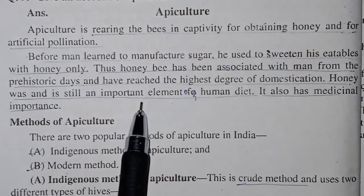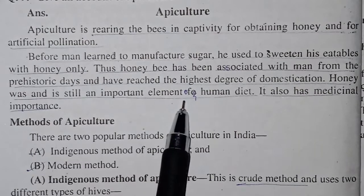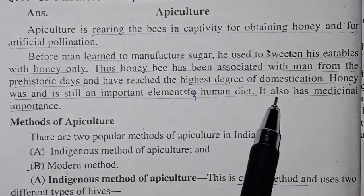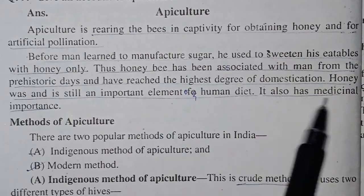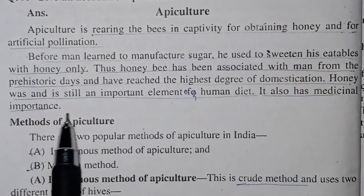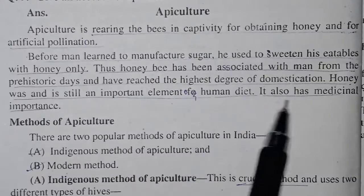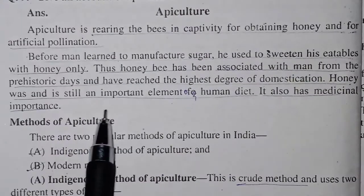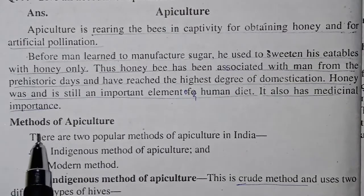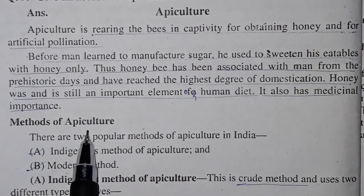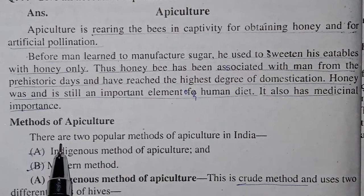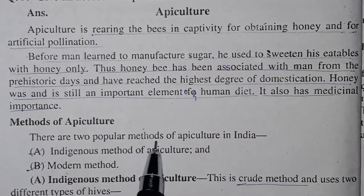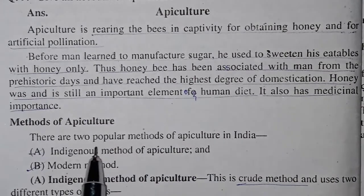Honey was and is still an important element of human diet. It also has medicinal importance — it is used in medicine. There are two popular methods of apiculture in India.